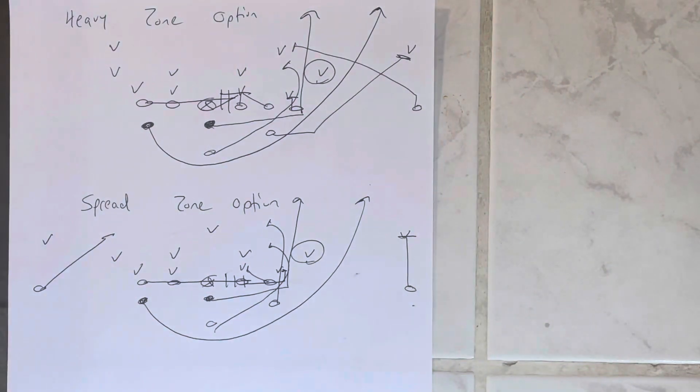And that's where the zone option breaks down out of the spread formation. Right there is where the zone option breaks down is because the guard has to get leverage on number one. He's got to get outside leverage on him. Very, very hard thing to do.